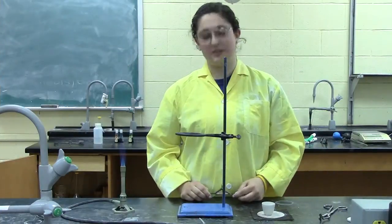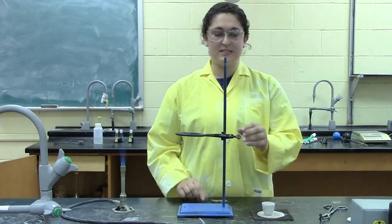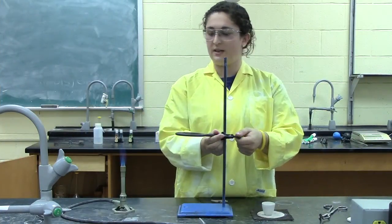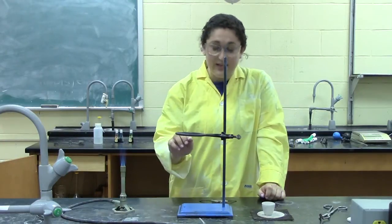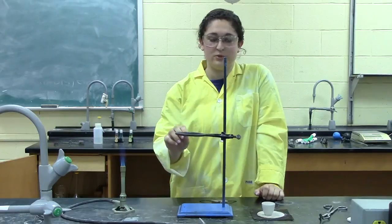When using a Bunsen burner to dry a sample, you first need to attach your iron ring to your stand. It needs to be at a height where the inner core is at a good height to heat your sample because you want to heat the crucible intensely.